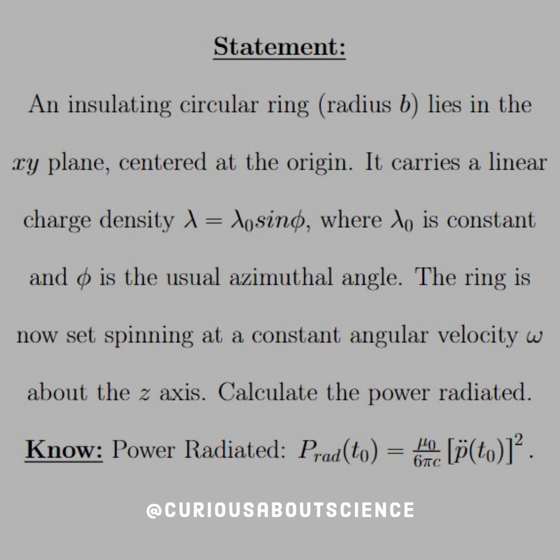Here we see that an insulating circular ring of radius b lies in the xy plane, centered at the origin. It carries a linear charge density λ = λ₀ sin φ, where λ₀ is a constant and φ is the usual azimuthal angle.